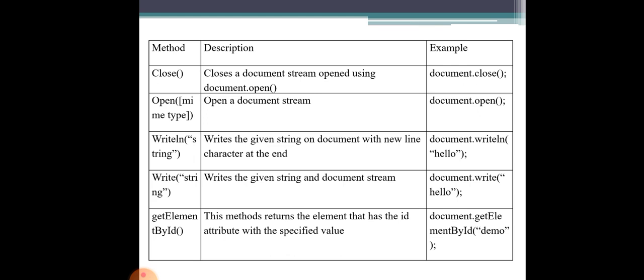Now for methods. The writeln method writes the given string on the document with a new line character at the end. document.writeln applies to a number of statements. If you have 4 statements, each will be printed on a new line.